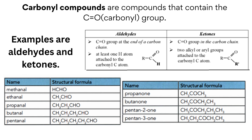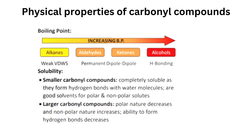Examples of aldehydes include methanal, ethanal, propanal, butanal, and pentanal. Examples of ketones include propanone, butanone, pentan-2-one, and pentan-3-one.